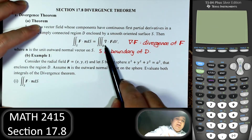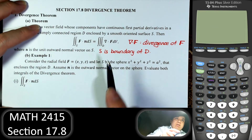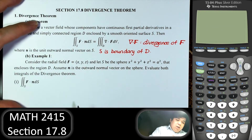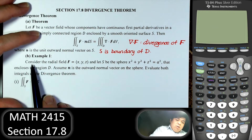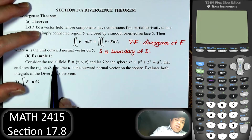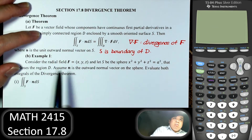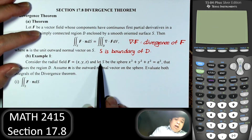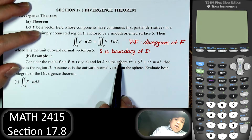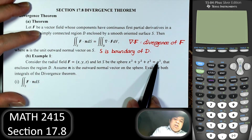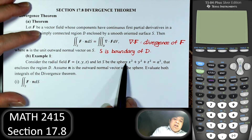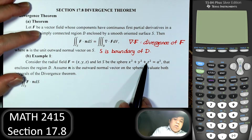The difference here is of course that function. Let's look at an example. Consider the radial field F. Let S be the sphere of radius A centered at the origin (0, 0, 0) and enclosing region D.